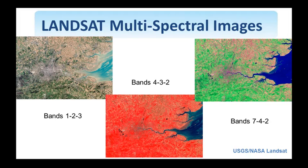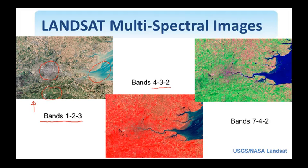These examples are from a different area — the city of London. Combining the three visible bands, one obtains an image that looks kind of natural: the city shows in gray, water is blue, and vegetation is in green. Combining the 4-3-2 bands, which includes two visible and one infrared band, one is able to better see the vegetation, since infrared is reflected differently.